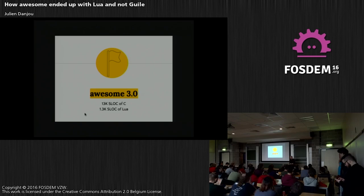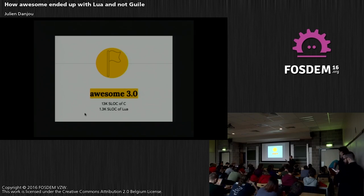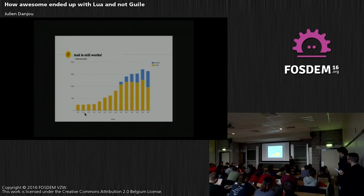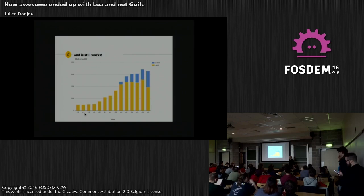That was Awesome version 3, released with Lua support as a programming language. We exposed only a few functions back then — you couldn't do as many things as you can today with Awesome 3.5. But compared to DWM with its 2,000 source lines of C code, you had around 13,000 lines and you could do a lot more. It grew, and it still works today. There are still a lot of users — I think around 1,000 people on the mailing list, so probably 10 times more users total.